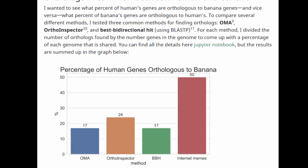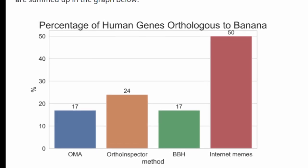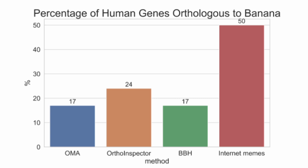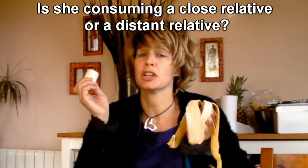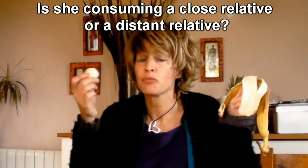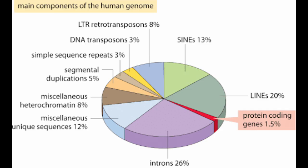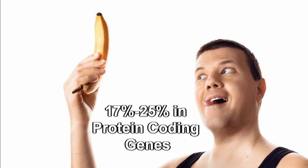All of the orthology inference methods tested showed a maximum of 25% of human genes being orthologous to banana genes, and a minimum of 17%. These results give the most leeway as they used protein sequences, which are the genomic elements most likely to be conserved. So it isn't 50% — it's 17 to 25%. But do humans really share 17 to 25% of their DNA with bananas? Not quite. Remember, we were comparing DNA that codes for proteins to get the highest similarity, and protein-coding DNA makes up only 1% of the entire genome. So humans are 17 to 25% similar to bananas when looking at protein-coding genes, but less than 1% identical when looking at all the DNA in their respective genomes.